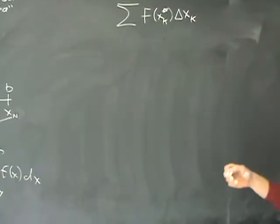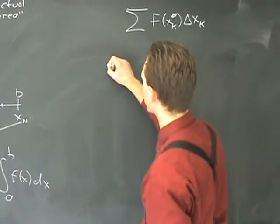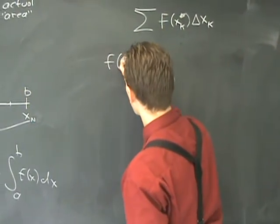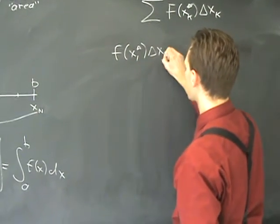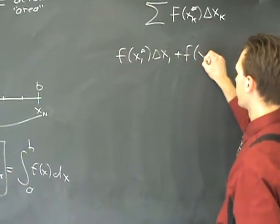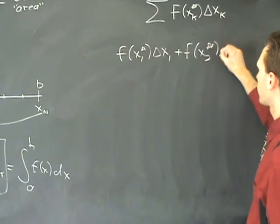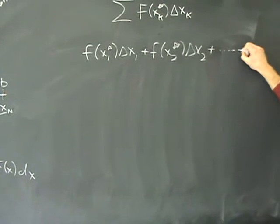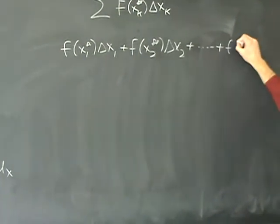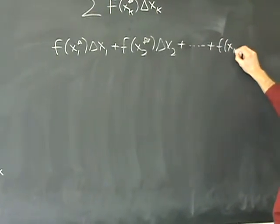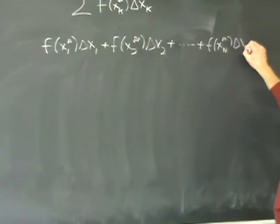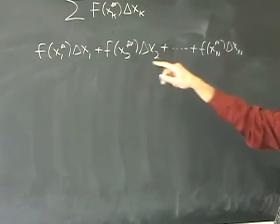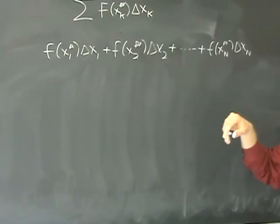This is nothing more than base times height, base times height, base times height. So I'm going to dispense with the sigma and write it like this: f of x1 star delta x1 plus f of x2 star delta x2 plus et cetera. The last one will be little f of xn star delta xn. Now this is all small f's, just for small f.